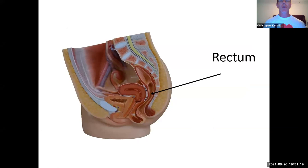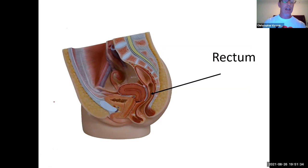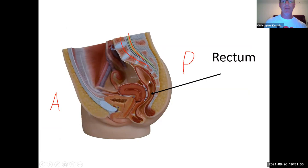Here is one of our sagittal cut models so we can look at internal structures. The anterior part is here and the posterior part is back here. You can see the spine and spinal cord. Just in front of the spine is the rectum. Here's your tailbone, also known as the coccyx. The rectum sits all the way in the posterior portion.